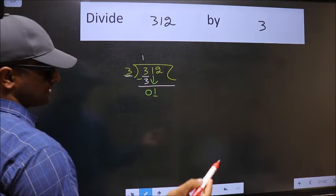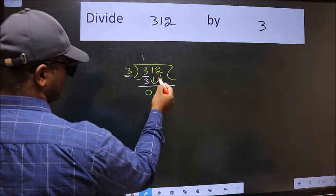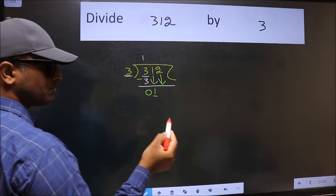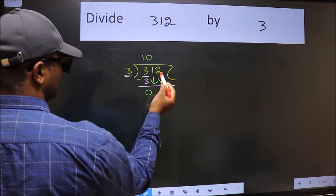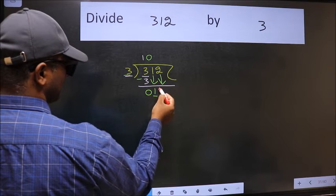So we should bring down the second number. And the rule to bring down second number is we should put 0 here. Then only we can bring down this number.